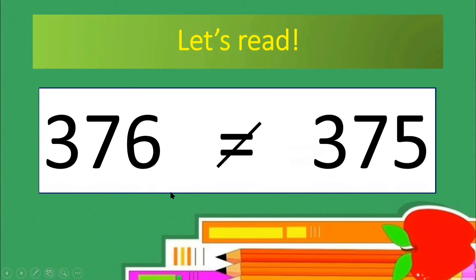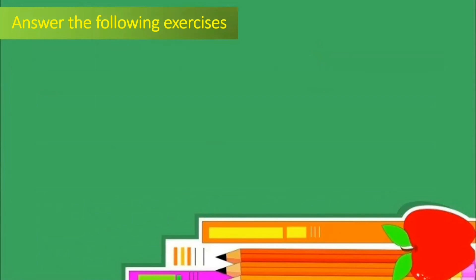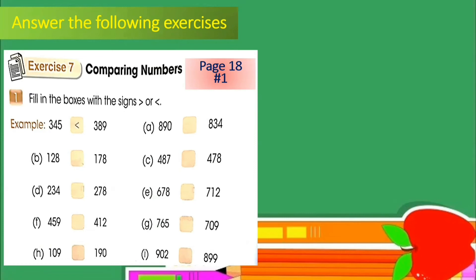376 is not equal to 375 — your turn. Well done! 745 is smaller than — your turn.